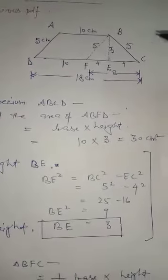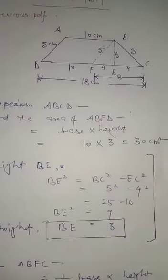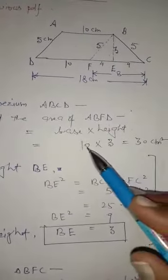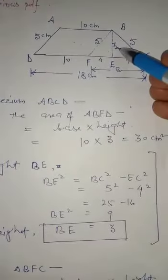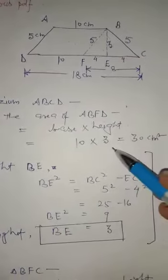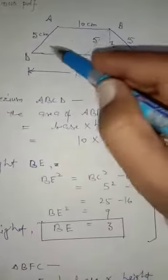Now we know the height. Parallelogram area equals base times height. Base is 10 cm, height is 3 cm. So 10 times 3 equals 30 cm square. The parallelogram area is 30 cm square.